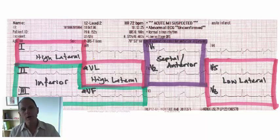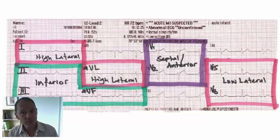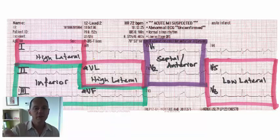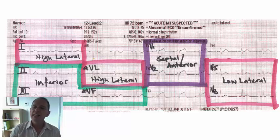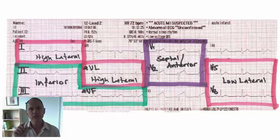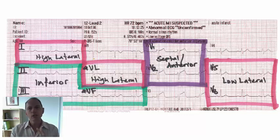Now, septal and anterior leads: V1 and V2. V1 is always septal. V2 is possibly septal but possibly also anterior, and what you need to do is look at the company that it keeps. If you see ST elevation in V2 and V1, then you're looking at septal infarction or damage to that portion of the heart. But if you're seeing ST elevation in V2 but not in V1, and maybe you are seeing elevation in V3 and possibly even V4, then V2 is relating to an anterior portion of the heart — because that lead looks at both anterior and septal portions. So look at the company that it keeps; don't just see a single lead in isolation.